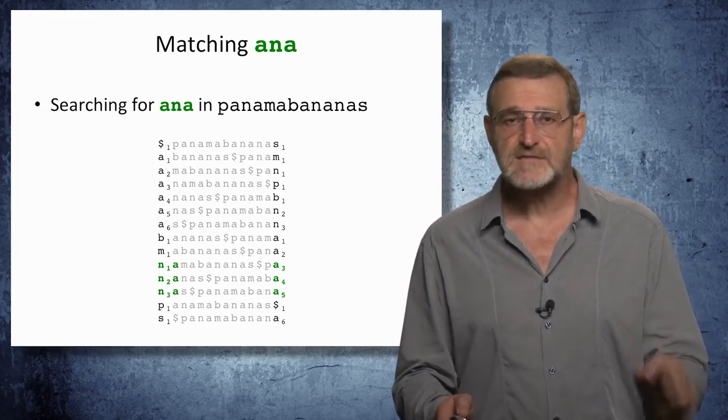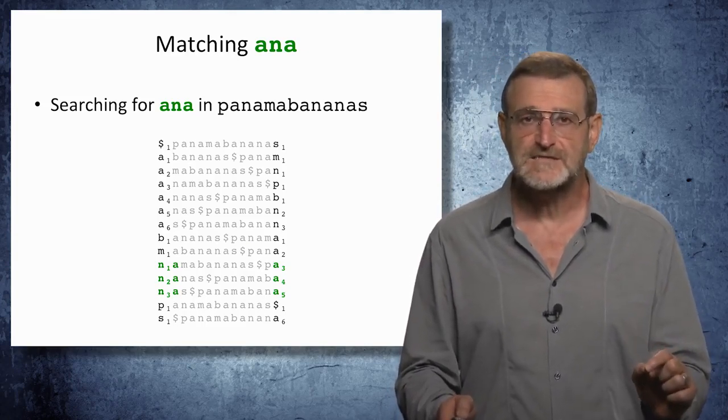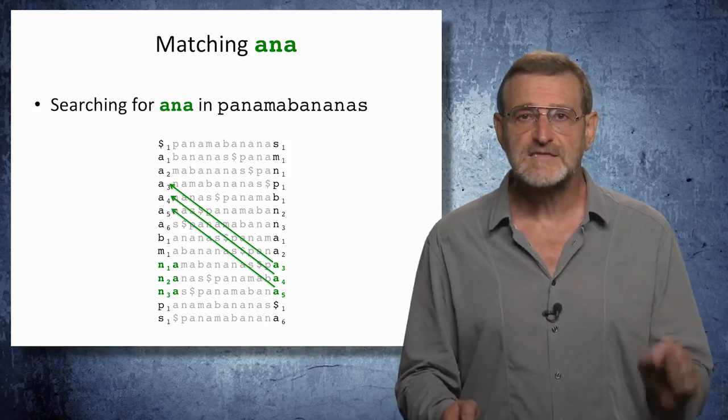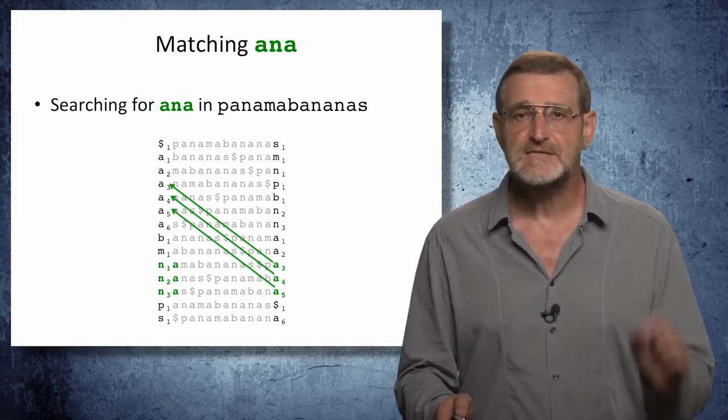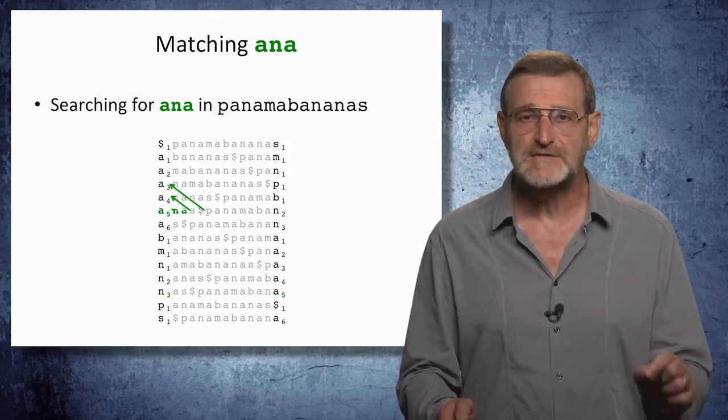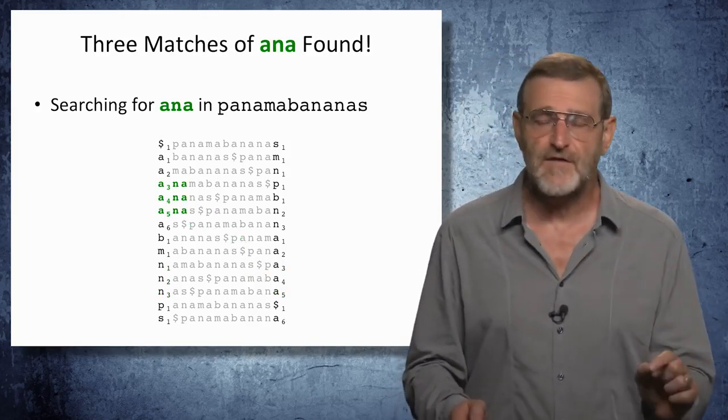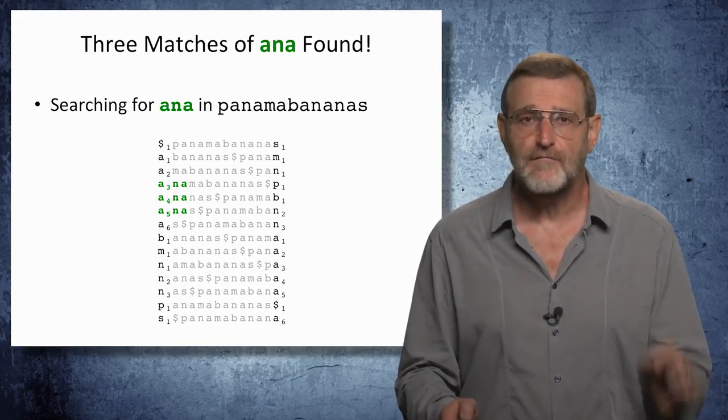After we found A in these three rows, then using again the first-last property, we find where these three occurrences of 'ana' appear at the beginning of our cyclic rotation. As a result, we found three matches of 'ana'.